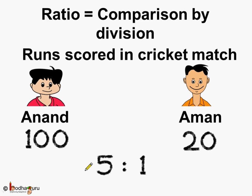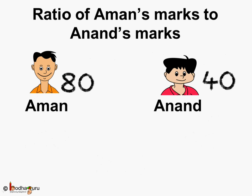When we talk about ratio — here the ratio is 5 is to 1 — the numbers 5 and 1 are known as the terms of the ratio. Like in the other example where the ratio was 2 is to 1, the two terms of the ratio are 2 and 1.